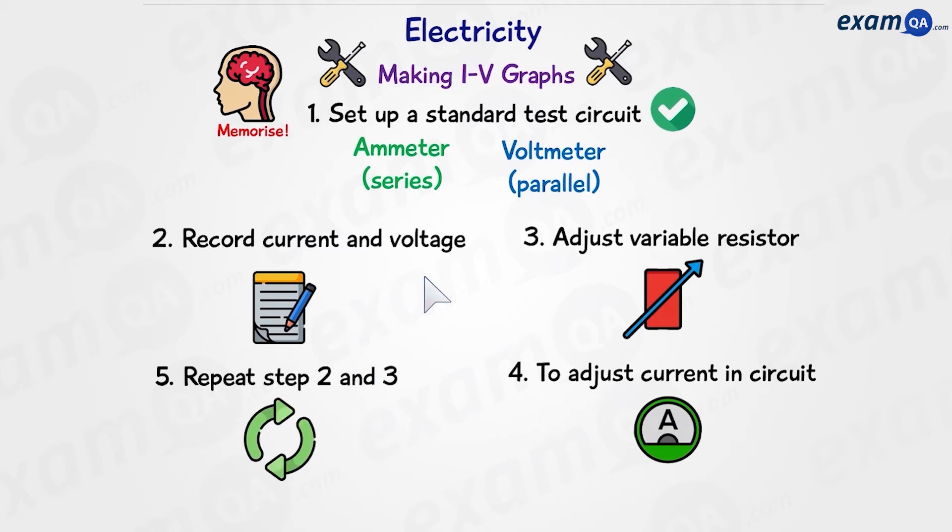we can repeat steps two and three. So, record current and voltage, then adjust the variable resistor, and go back and record. We keep on doing this so that we can get multiple readings. Once we have all those readings, we can plot that on an IV graph.